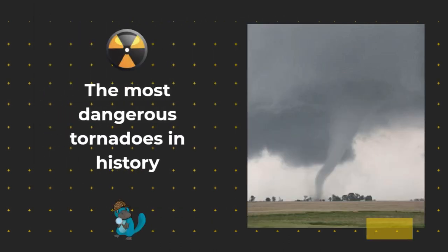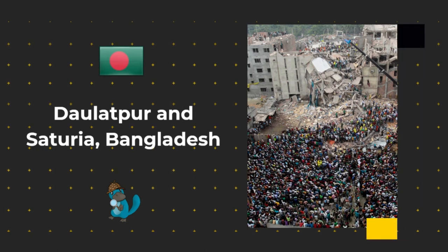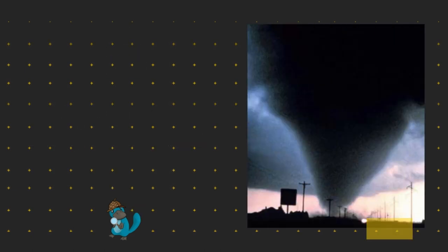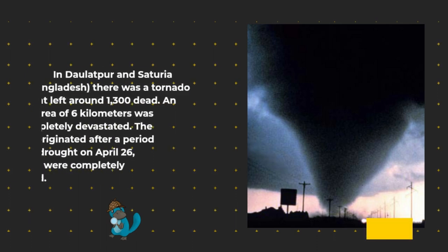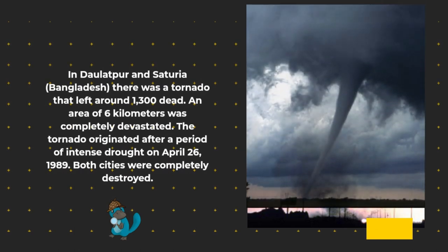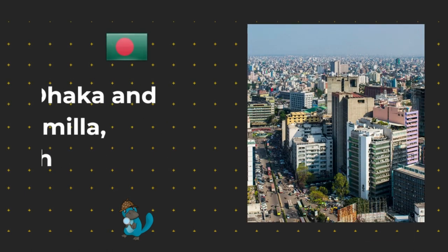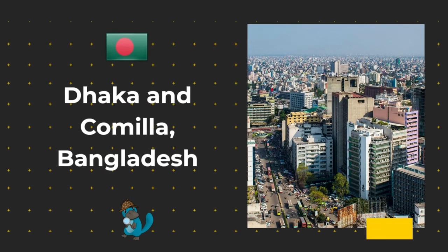The Most Dangerous Tornadoes in History. In Daltapur and Satoria, Bangladesh, there was a tornado that left around 1,300 dead. An area of 6 kilometers was completely devastated. The tornado originated after a period of intense drought on April 26, 1989. Both cities were completely destroyed.